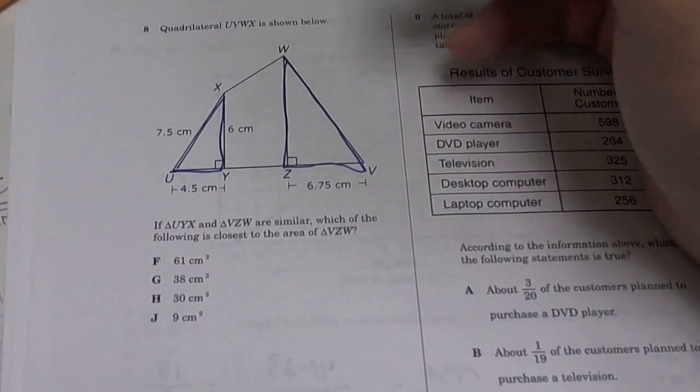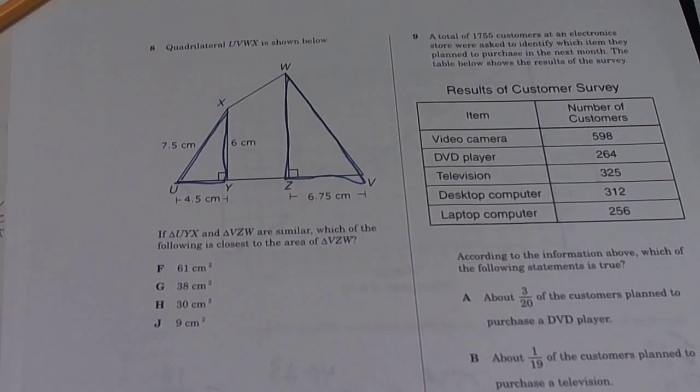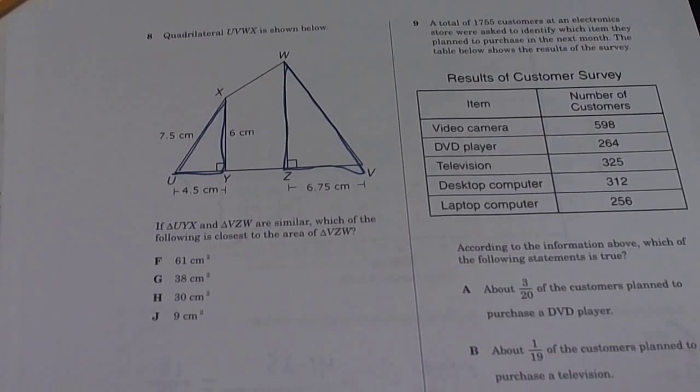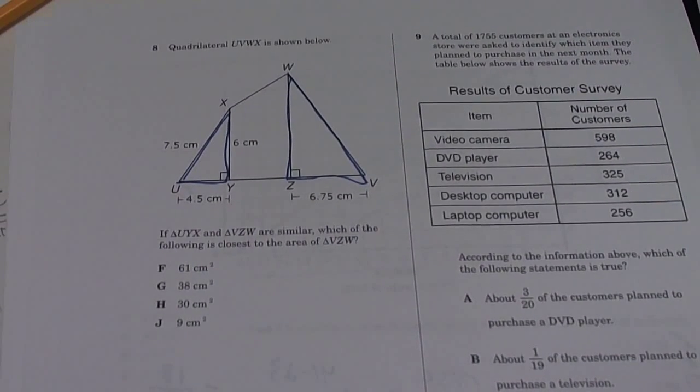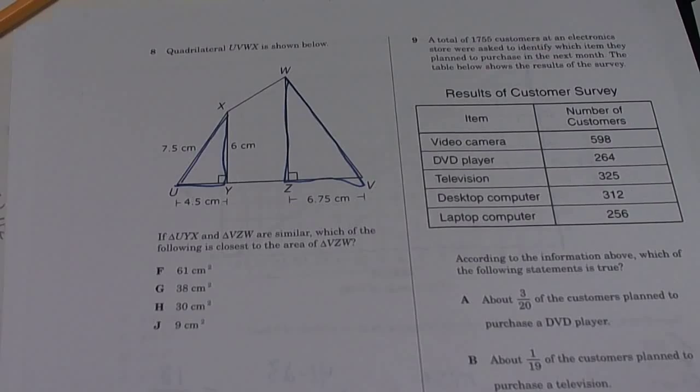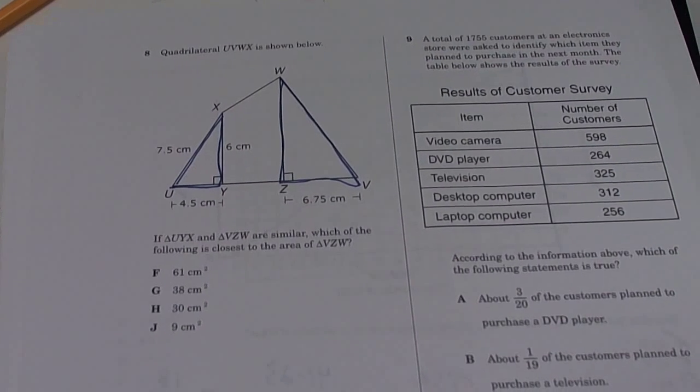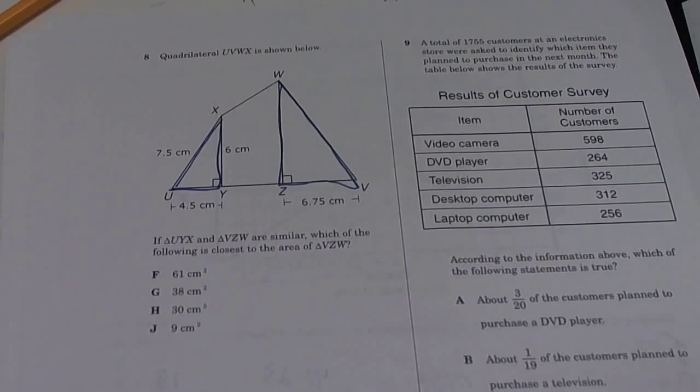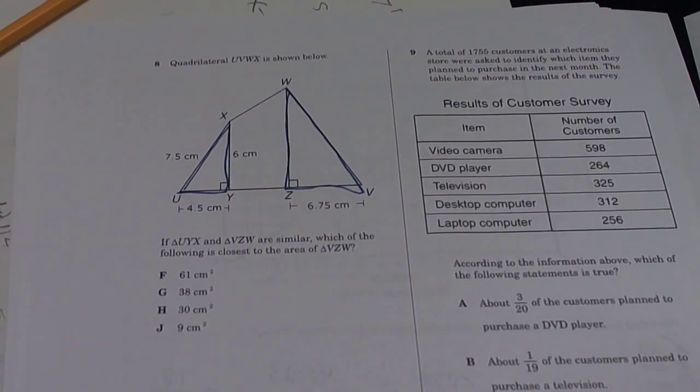Okay, so remember they're similar means everything has to be in proportion. So we're going to proportion the two sides and find the area. So which I think that's what we're going to end up doing.